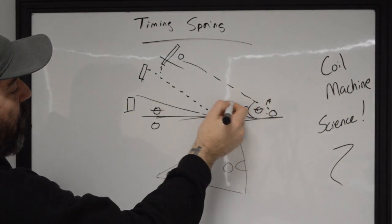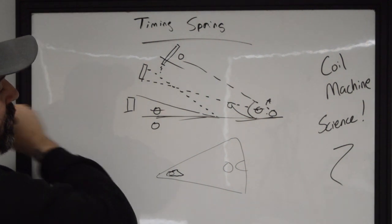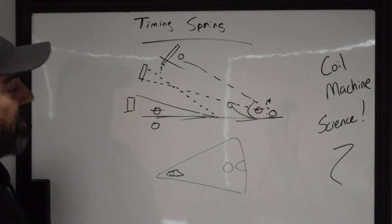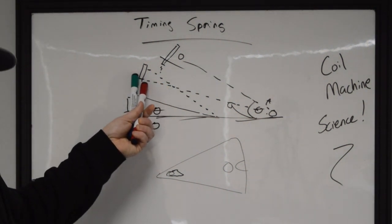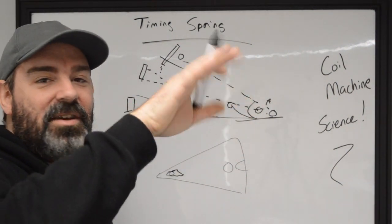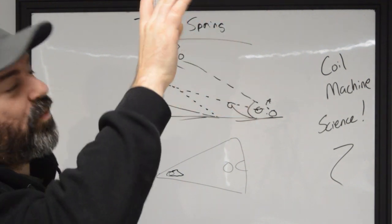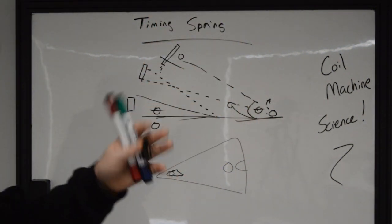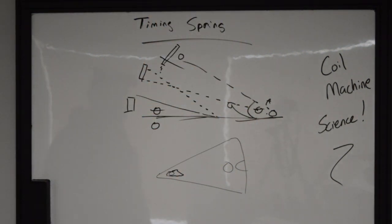If we can cut that point directly in half, that's realistically where the tips of our timing spring should be, just as a rough cause. From that point, you can bring it up or bring it down if you want to make it run faster or slower, but it's just the easiest way to do that.